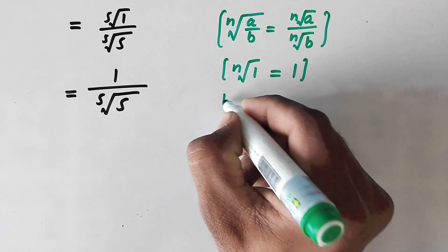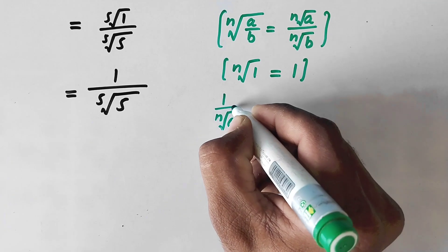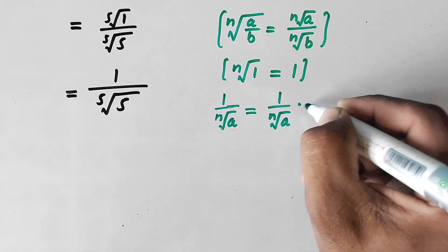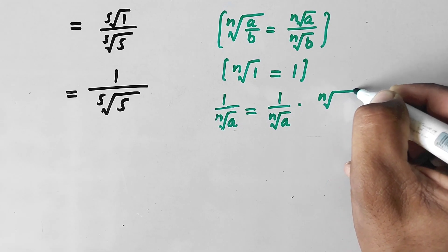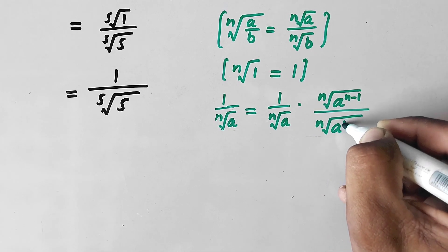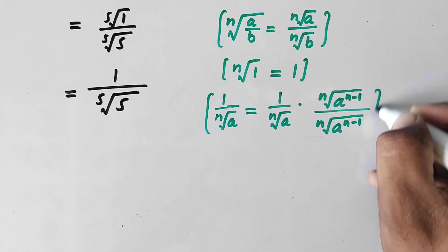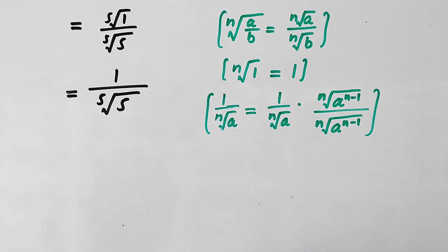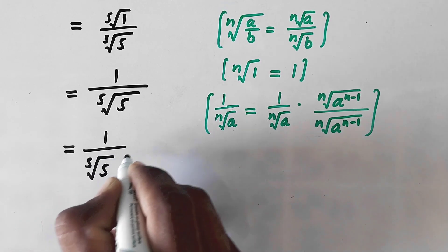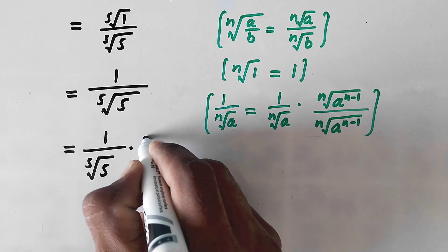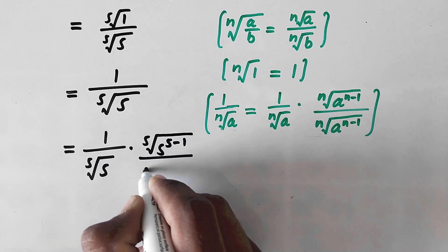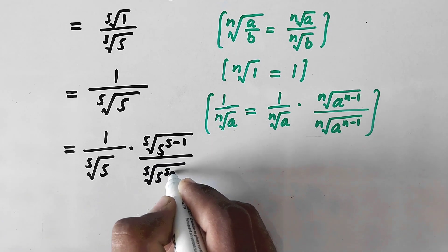Next, we follow the rationalization rule: 1 over the nth root of a equals the nth root of a^(n−1) divided by the nth root of a^(n−1). Applying this to our expression, 1 over the fifth root of 5 becomes the fifth root of 5^(5−1) divided by the fifth root of 5^(5−1).